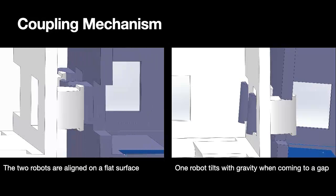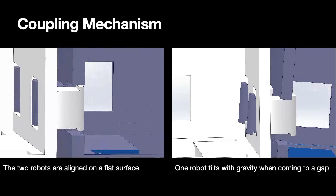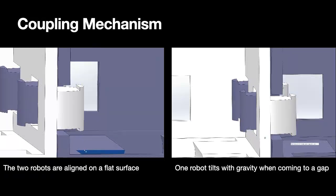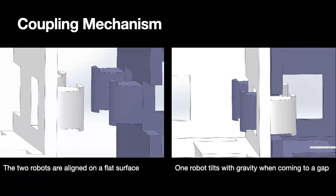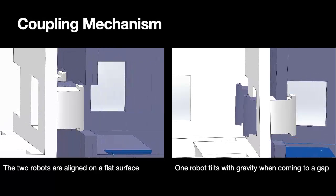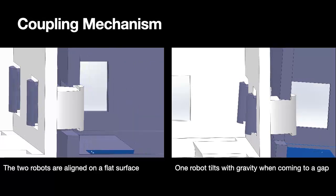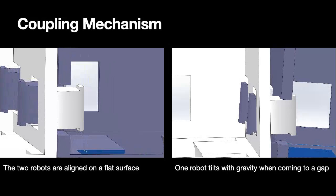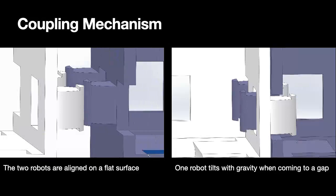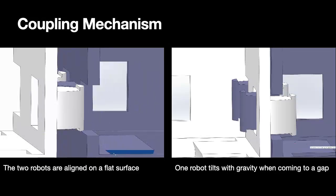On the right-hand side, we are showing that when one of the robots, for example the purple robot, is going towards a gap, when the robot reaches the gap, it will tilt with gravity. And when it tilts, the hooks will be able to hold the robot in place. This will help the robot to form a bridge across the gap.